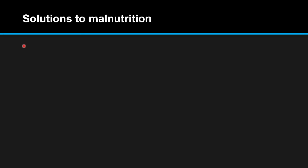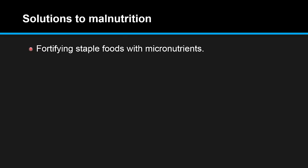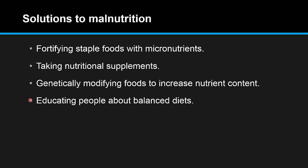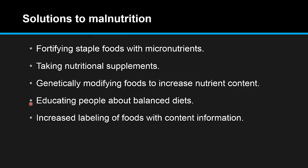Solutions to Malnutrition. Here is a list of things that can be done to prevent micro and macronutrient deficiencies: fortifying staple foods with micronutrients, taking nutritional supplements, genetically modifying foods to increase nutrient content, educating people about balanced diets, and increased labeling of foods with content information.